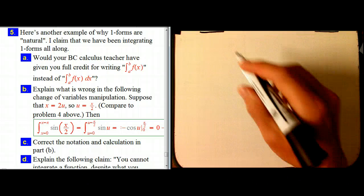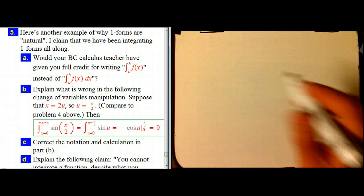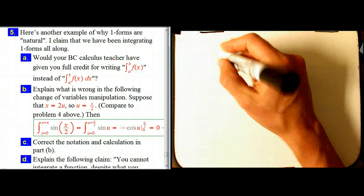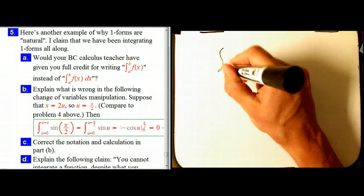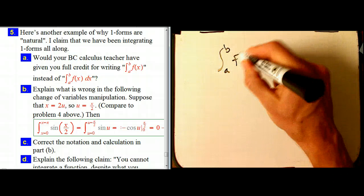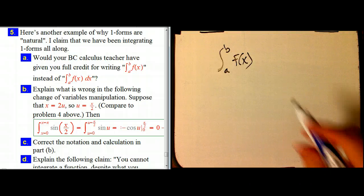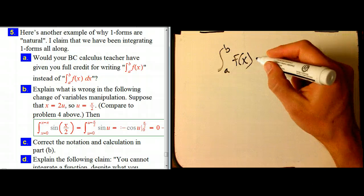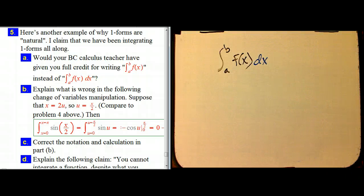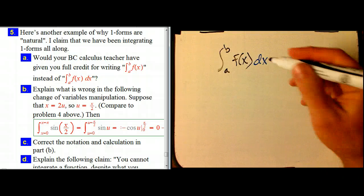So, the claim is that we've actually been integrating one forms all along. The simplest thing is that if you're taking a calculus class, you're not going to get full credit for writing an expression like that. You're only going to get full credit if you write a dx there. Why is that? Why are teachers such sticklers about that?